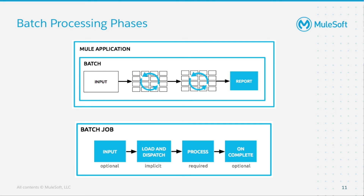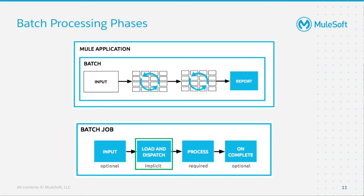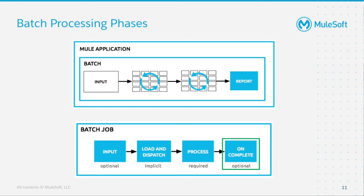Let's go into further detail of the four batch processing phases within the batch job scope. First, input allows connectivity and transformation. Two, load and dispatch splits up and batches records for processing. Three, process allows multi-step record processing. And four, on-complete allows for reporting on batch job stats.